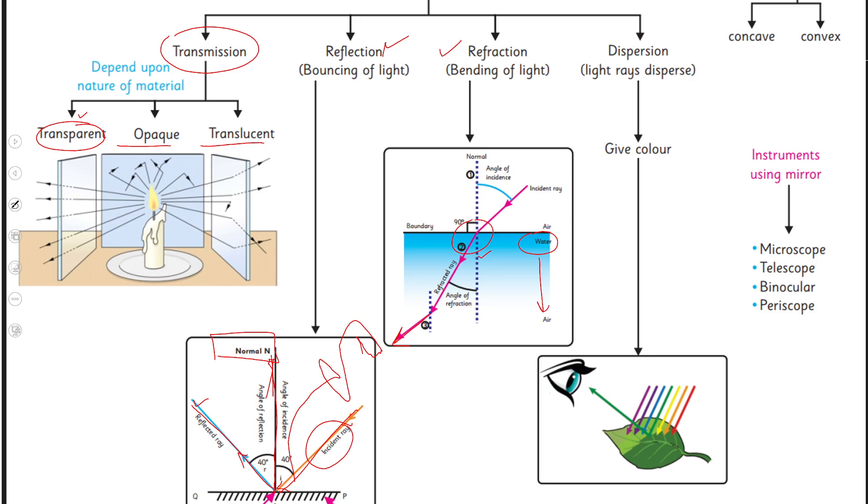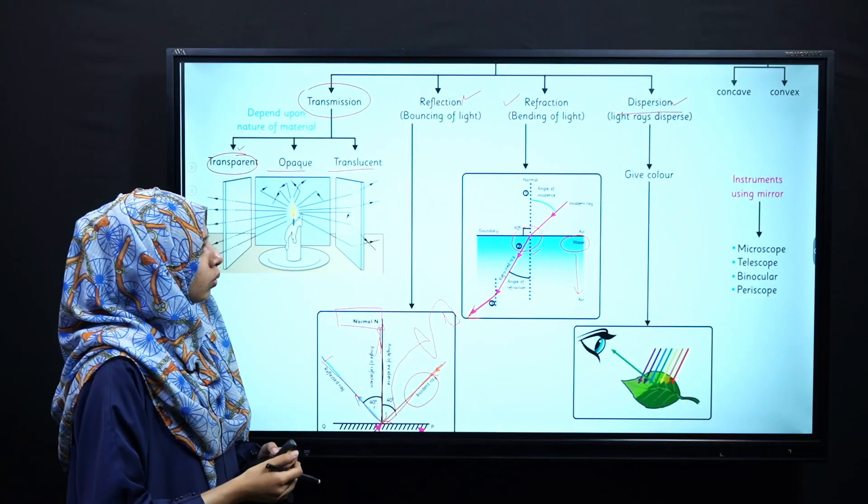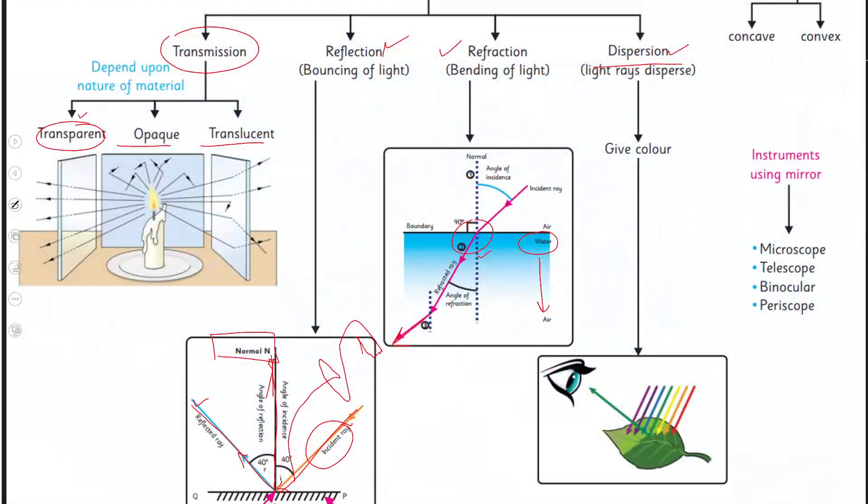Isi tarah humne ek aur behavior ko discuss kiya that is the dispersion. Humne dekha ki jab hum white light ko prism se pass karaye to light undergoes dispersion and gives a seven color spectrum jisko hum visible light ka spectrum kehte hain. Uske ilawa humne discuss kiya ke jab light kisi bhi surface ke upar padti hai to hum wo color dekh paate hain that is reflected to our eyes. Wo tamam color jo absorb ho jate hain by that object hum unko nahi dekh paate.